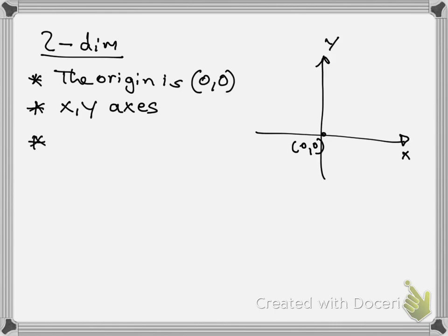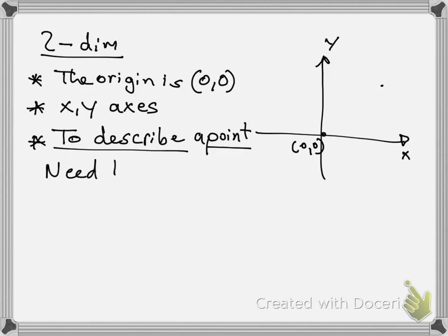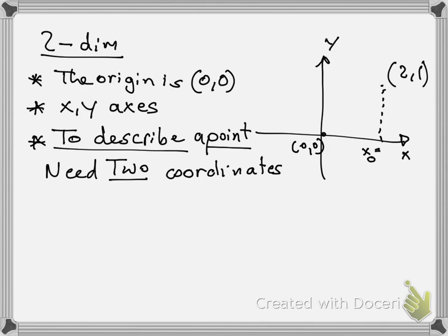Now to describe a point in 2D — let's say this point here — I'm going to need two numbers: the x-coordinate and the y-coordinate. So we need two coordinates. For example, the point (2, 1) means x₀ is two and y₀ is one. We need two coordinates: x₀ and y₀.